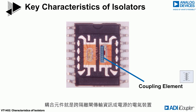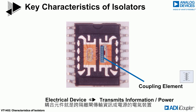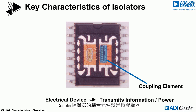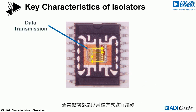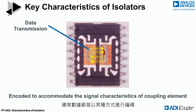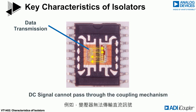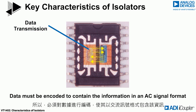The coupling element is the electrical device that transmits information or power across the insulation barrier. In the case of an i-coupler insulator, it's a microtransformer. Data is almost always encoded in some fashion to accommodate the signal characteristics of the coupling element. For example, transformers cannot pass a DC signal, so the data must be encoded to contain that information in an AC signal format.